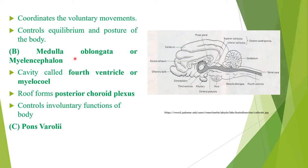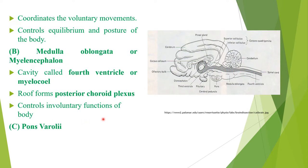The next part of the brain is the posterior-most part, called the medulla oblongata or myelencephalon. It is located beneath the cerebellum and has a cavity called the fourth ventricle or myelocele, which is continuous with the central cavity of the spinal cord. The roof of the medulla oblongata is non-nervous and thin and is called the posterior choroid plexus. The main functions of the medulla oblongata are to control involuntary functions like urination, defecation, blood pressure, and swallowing of food.